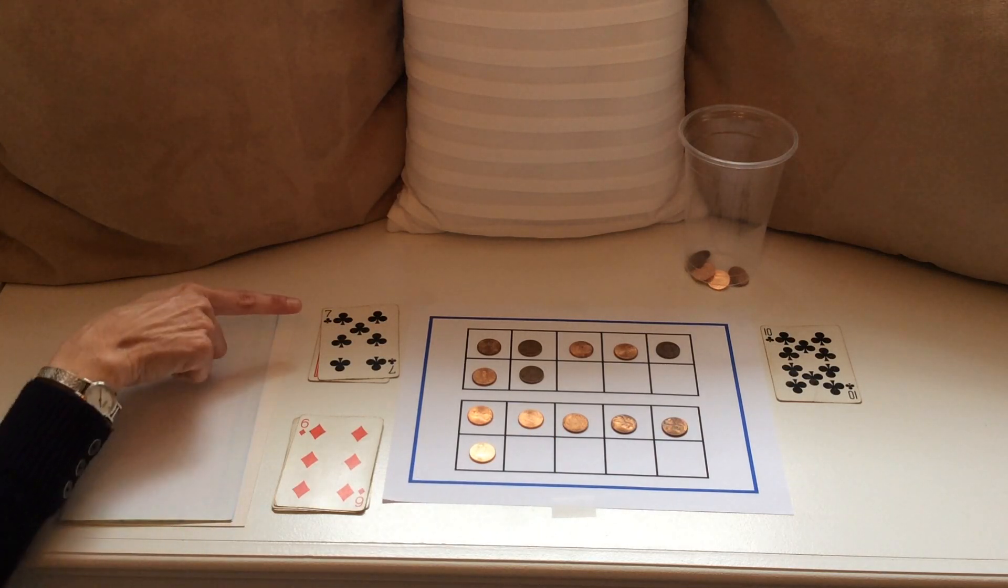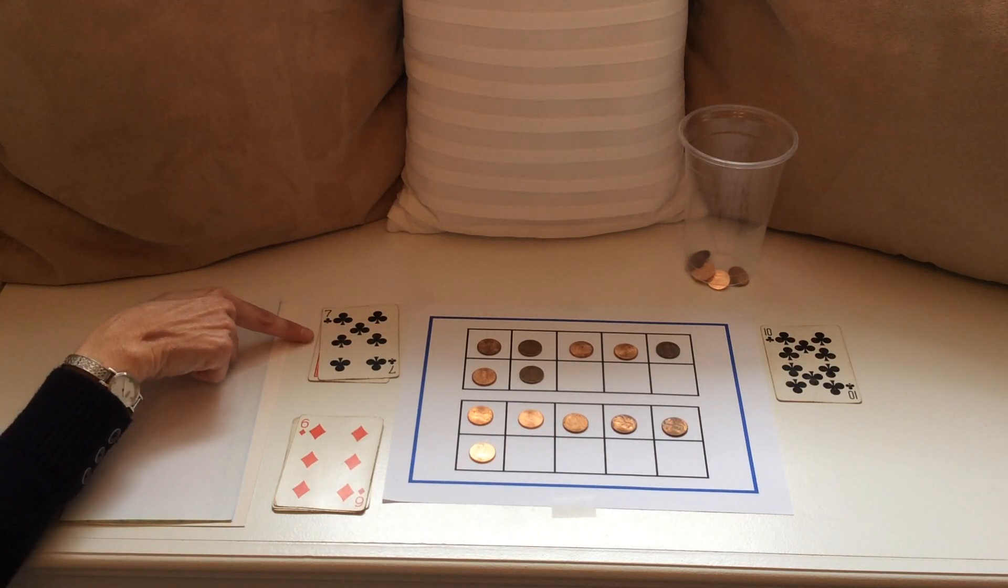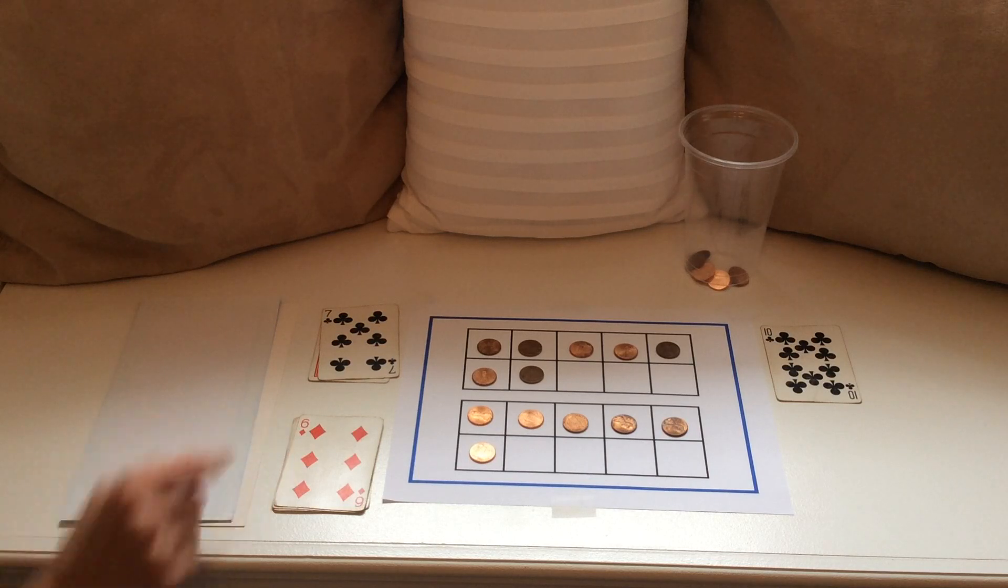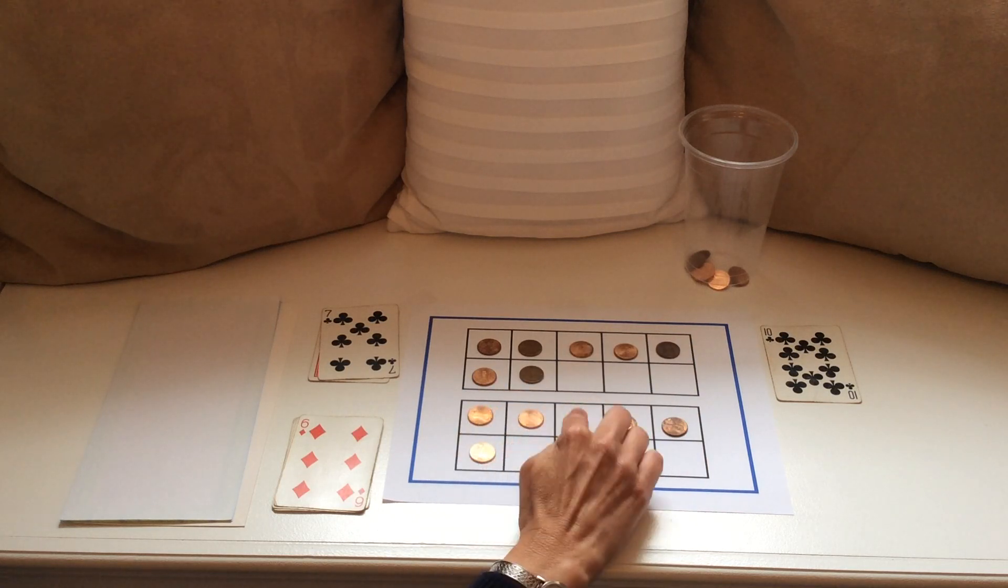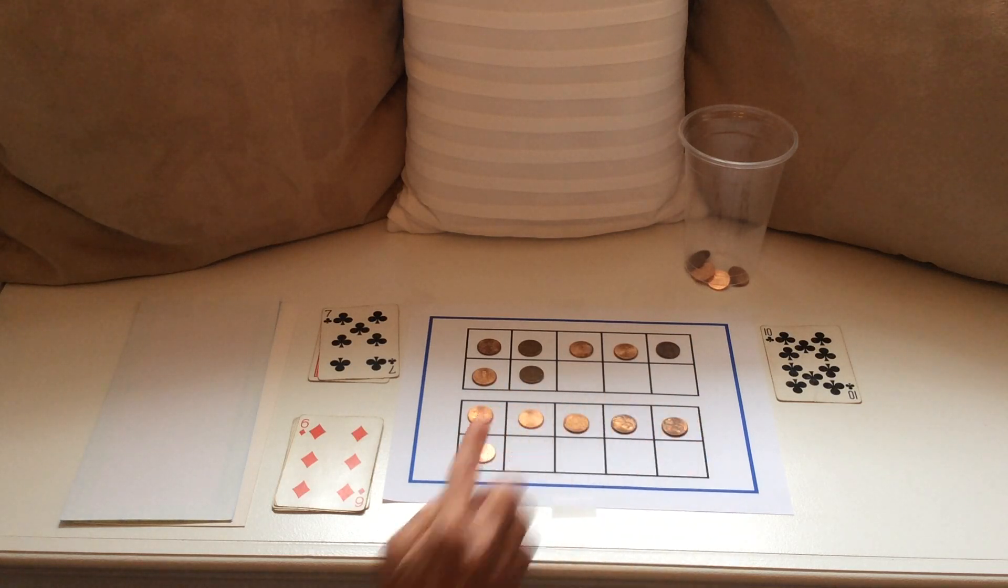I now have a picture for the vertical addition sentence 7 plus 6. 7 plus 6 equals 7, 8, 9, 10, 11, 12, 13.